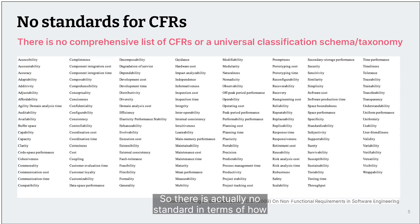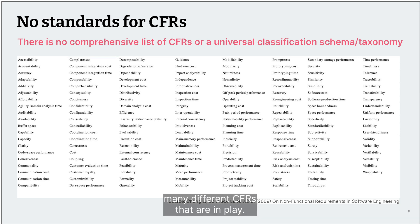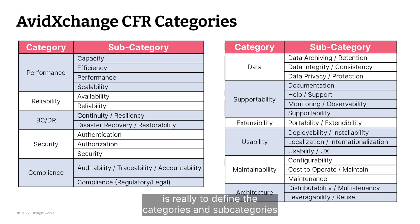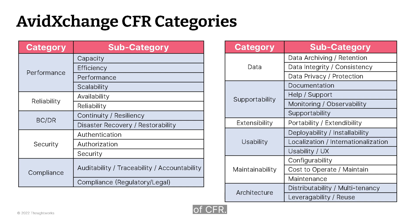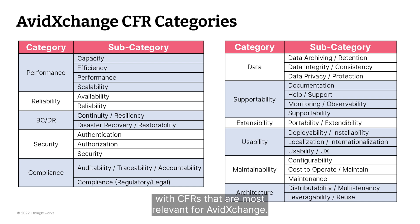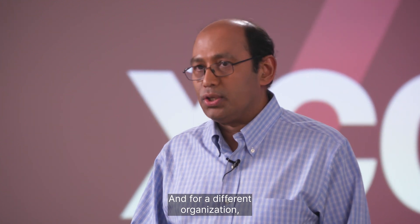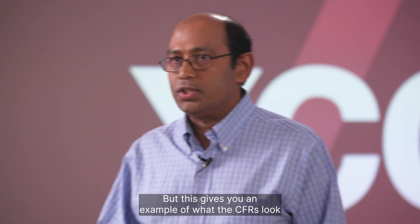There is actually no standard in terms of how to classify or name CFRs, and on this screen you can see there are so many different CFRs in play. One of the first things we had to do at Avid Exchange was really define the categories and subcategories of CFR. On the screen, you see there are 11 categories and 30 subcategories of CFRs — this list was much bigger initially, and we had to review and refine to come up with the CFRs most relevant for Avid Exchange. This list also shows the priority of CFRs, and for a different organization the priorities may be different.